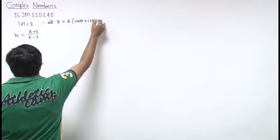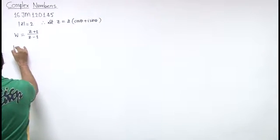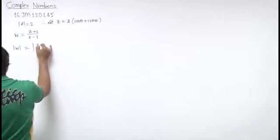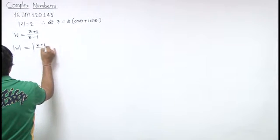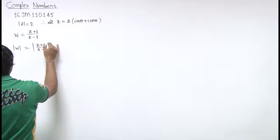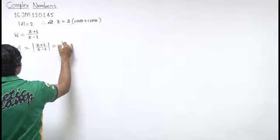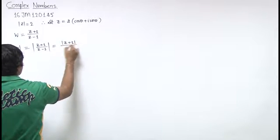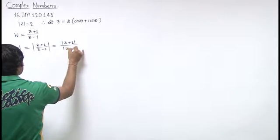Argument is coming in theta. And magnitude of w is magnitude of z plus 1 upon z minus 1. And properties of modulus say, mod of z plus 1 upon mod of z minus 1.